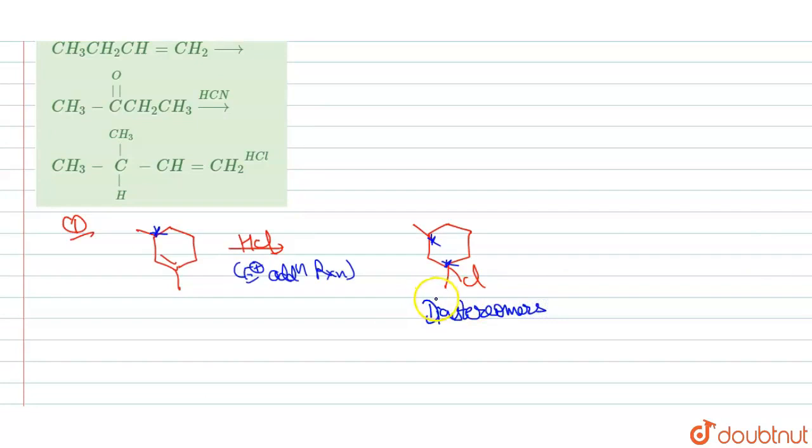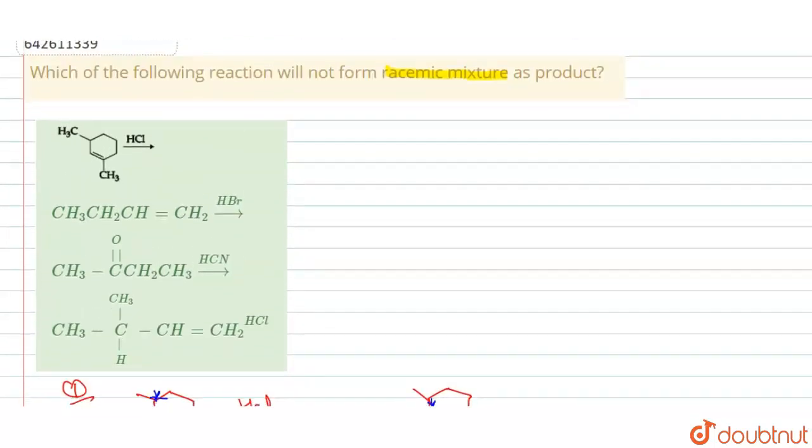The racemic mixture will be there when if in reactant there will be nothing, no chiral center, but when in product when new chiral center is formed, then the product will be racemic mixture. Product will be formed as racemic mixture.